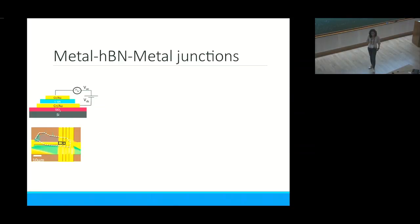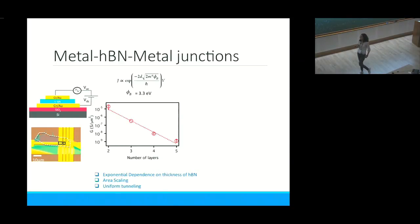Looking at the tunnel characteristics, the tunneling IV is pretty much linear and you can extract a low bias conductance. The conductance as a function of the number of layers of boron nitride goes exponentially down, which tells you that you have a very good tunnel barrier. The conductance depends on the distance between the two metal electrodes. We also have area scaling, which means tunneling is uniform across the boron nitride barrier.